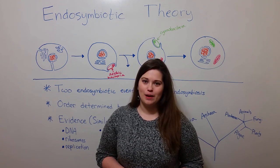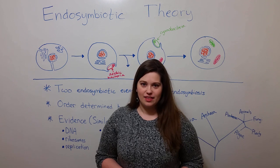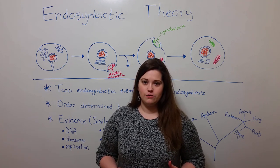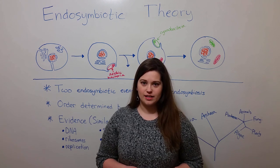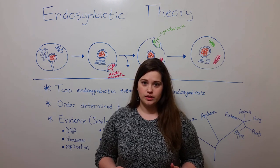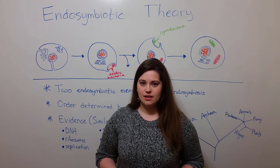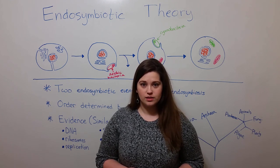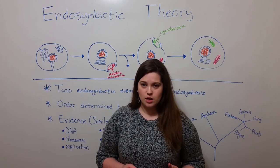Hi everyone and welcome to Biology Professor. Today we're going to talk about the endosymbiotic theory. This theory is the explanation for how scientists think that eukaryotic cells first arose. It also describes how scientists think that eukaryotic cells acquired two organelles, specifically mitochondria and chloroplasts.